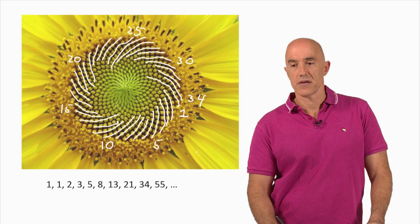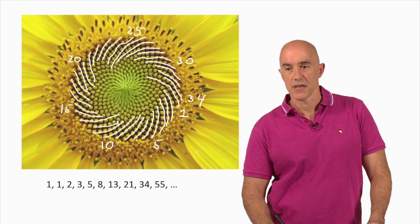So this is the clockwise spirals, right, clockwise spirals, thirty-four. What's special about thirty-four? Well, it's a Fibonacci number.